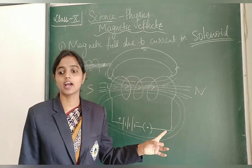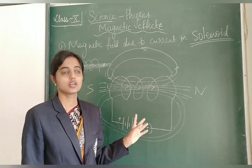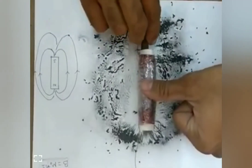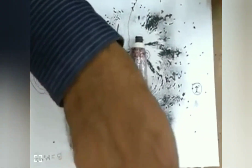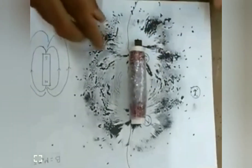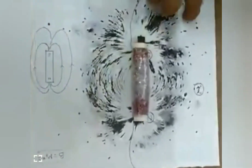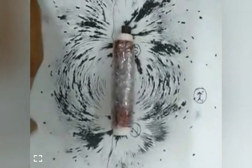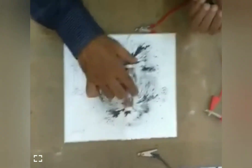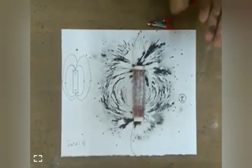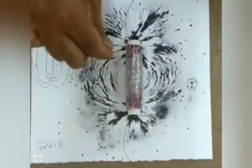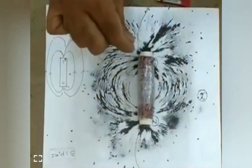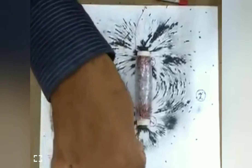Observe the video. Inside the coil — that is the solenoid — we have taken a soft iron core and we are sprinkling iron filings around the solenoid on a cardboard sheet. The terminals are connected to a battery. Just by tapping the cardboard sheet, we can observe that the magnetic field lines are exactly similar to the magnetic field lines in a bar magnet. Both are similar: the magnetic field lines are the same in both solenoid and bar magnet.